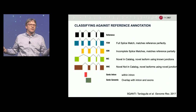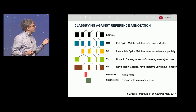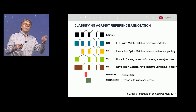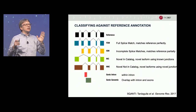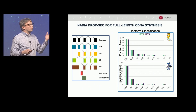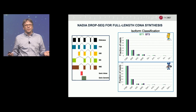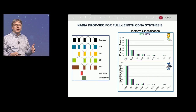Incomplete splice matches are also common, often because reverse transcriptase doesn't get all the way to the 5' end of the mRNA. Then there are two classes of novels: novel in catalog, meaning these are known splice sites but never seen joined together in the reference database; or novel not in catalog, meaning this is a new splice not seen at all in GenCode. We ran the barnyard experiment through Scanti: about 60–70% of both mouse and human reads correspond to full splice matches, about 20% are incomplete splice matches, and 10% together constitute the novel classes — quite similar to what we see in a bulk IsoSeq experiment starting with high-quality RNA.